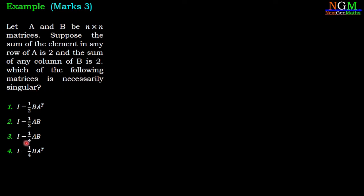We have 4 options. First option is I minus 1/2 times B into A transpose. Second option is I minus 1/2 times AB. Third option is I minus 1/4 times AB. Fourth option is I minus 1/4 times B into A transpose.